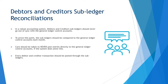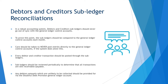Every debtor and creditor transaction should be posted through the subledgers — this includes invoices, payments, and any adjustments. Subledgers should be reviewed periodically to determine that all transactions are still receivable or payable. Any debtor amounts which are unlikely to be collected should be provided for via the doubtful debt provision general ledger account and not through the subledger. Any creditor amounts which are not valid should be reversed via the creditor subledger and not straight to the control account.